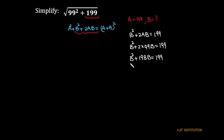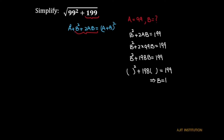We have to find the value of b such that b squared plus 198b equals 199. We can guess: something squared plus 198 times something equals 199. The value of b is quite simple — b equals 1. Alternatively, you can solve this as a quadratic equation in b.